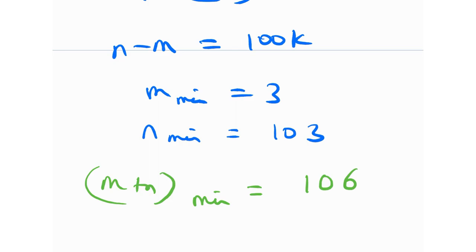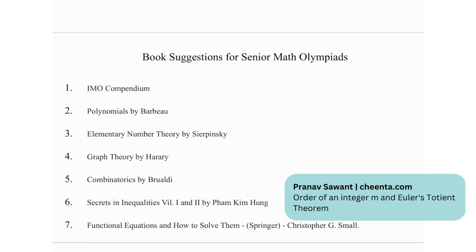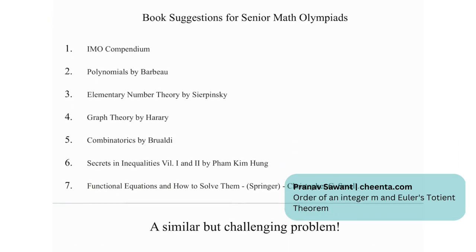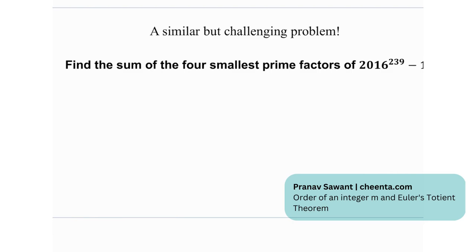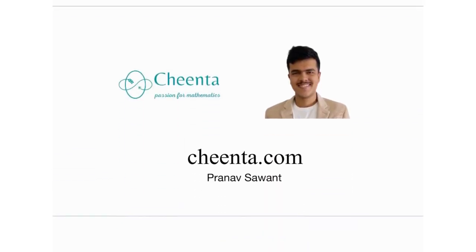This is quite a fascinating discussion — we learned the order of an integer modulo m, which really helps simplify congruence equations. We also have seven book recommendations for Senior Math Olympiads: AMO Compendium, Polynomials by Barbeau, Elementary Number Theory by Sierpinski, Graph Theory by Harary, Combinatorics by Brualdi, Secrets in Inequalities, and Functional Equations by Christopher G. At the end, there is a challenge problem: find the sum of the four smallest prime factors of a given number using Euler's Totient theorem and order of an element modulo m.